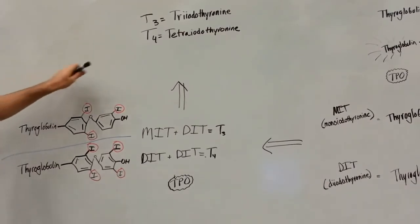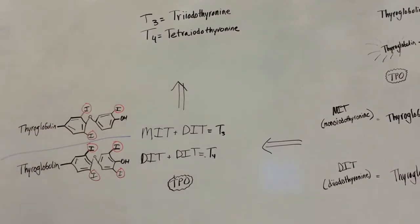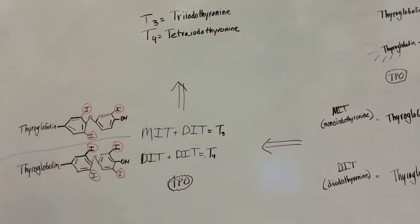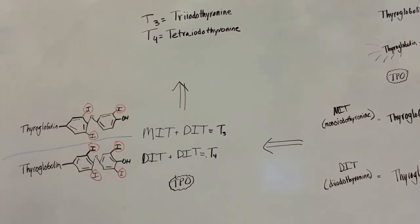So most of your hormone produced is going to be T4. Within the periphery, you can convert the T4 to T3, and that is how you replenish that T3 supply.